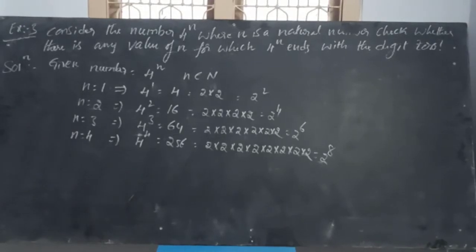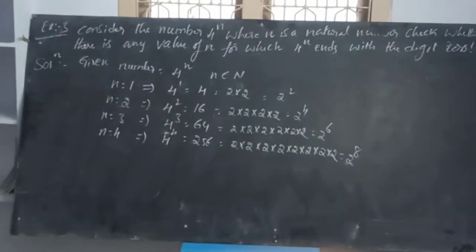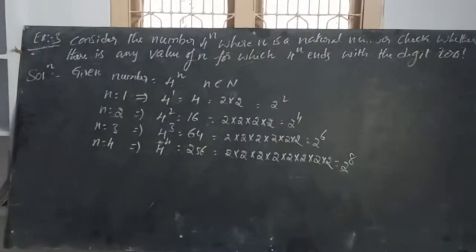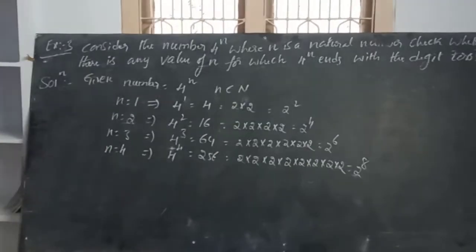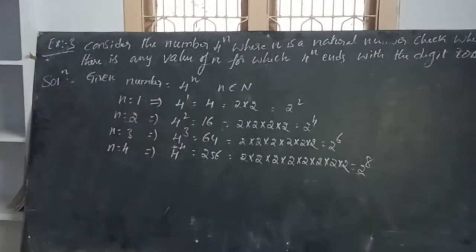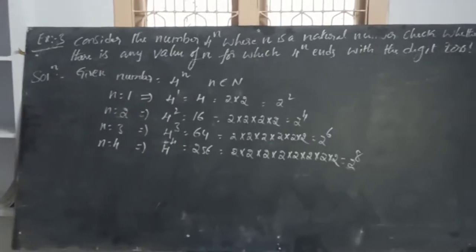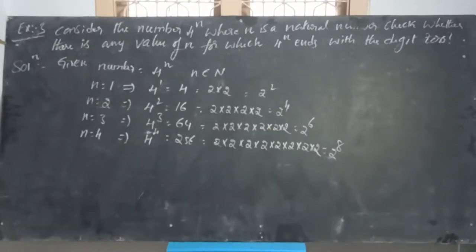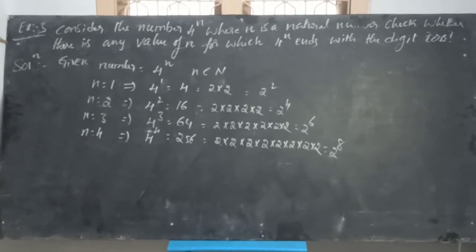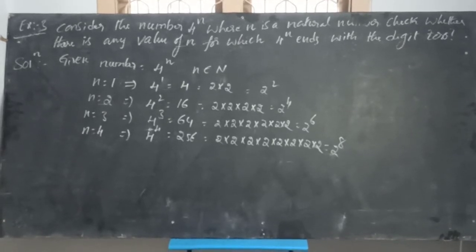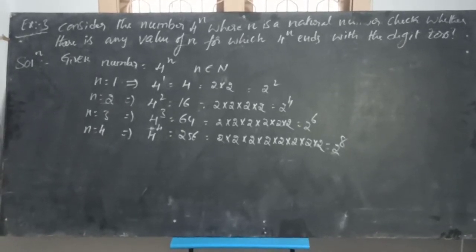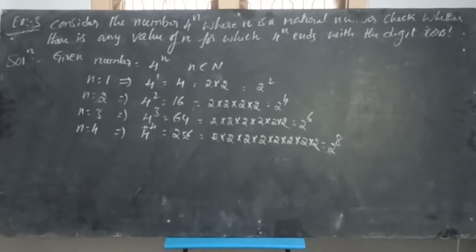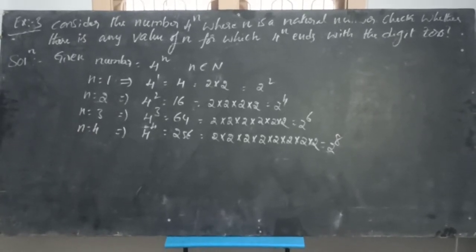Example 3: Consider the number 4 power N, where N is a natural number. Check whether there is any value of N for which 4 power N ends with a digit 0. So if any number ends with a digit 0, that means it is divisible by 10, or it is divisible by 2 and 5.